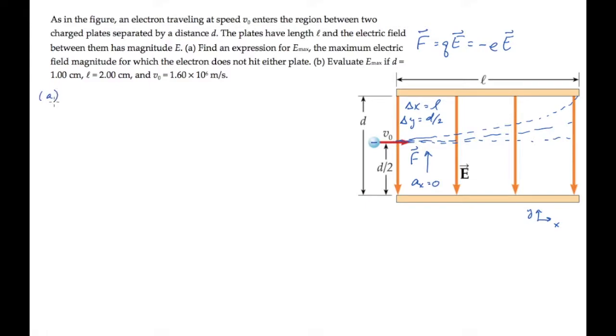In the horizontal direction, the acceleration is constant, so we can use the kinematic equations. With ax equals zero, we can solve for the time t that the electron spends between the plates. It equals delta x over v0x, which gives us l over v0.